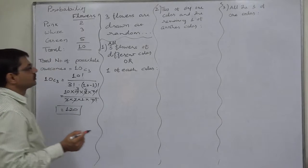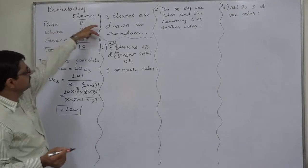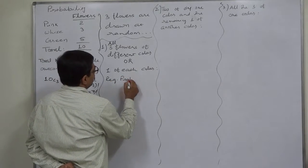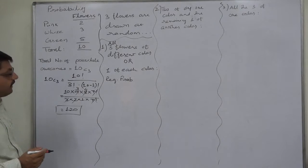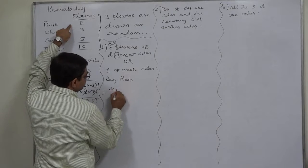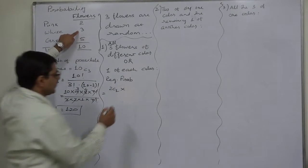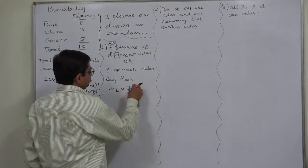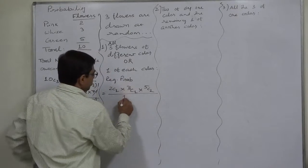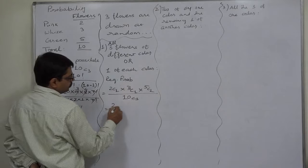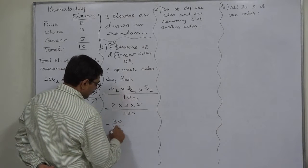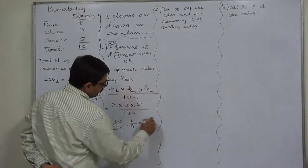The first event: all three flowers are of different colors — one of each color. The favorable number of cases: one pink out of two can be drawn in 2C1 ways, one white out of three in 3C1 ways, and one green out of five in 5C1 ways, divided by total cases 10C3. 2C1 is 2, 3C1 is 3, 5C1 is 5, giving 30/120 = 1/4 or 0.25.